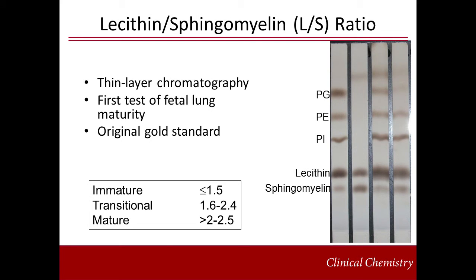The LS ratio is a thin layer chromatography test that is quantified by densitometry. The LS ratio describes the relative change in the concentration of lecithin to that of sphingomyelin in amniotic fluid. The greater the LS ratio, the more mature the fetal lungs are. The risk of respiratory distress is exceedingly low when the LS ratio is greater than 2 to 2.5. It's important to note that this test is the most difficult to perform because it requires considerable skill and expertise. Additionally, this test takes several hours to perform, and results are also affected by blood and meconium when they are present in the amniotic fluid.